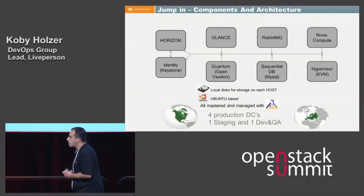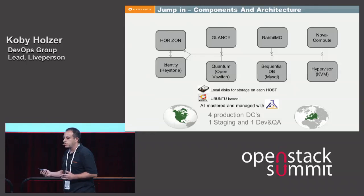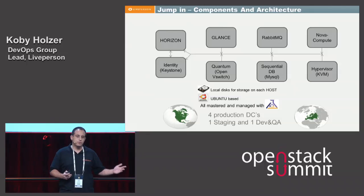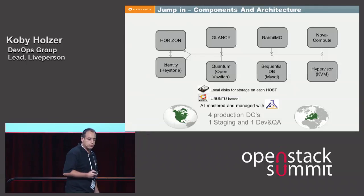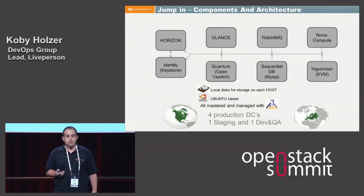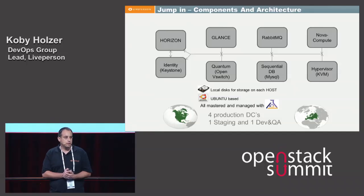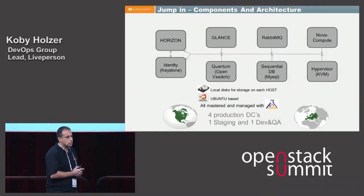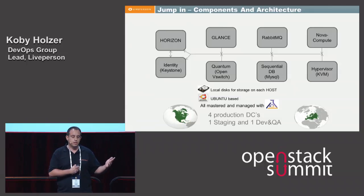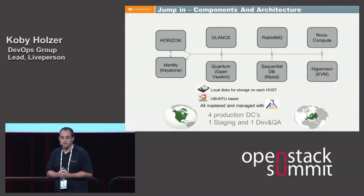We manage everything with Puppet end-to-end, from bringing new servers up to getting new services into production and ready to serve. We have four production data centers — two in North America, two in Europe — plus one staging and one dev environment as two additional smaller data centers.